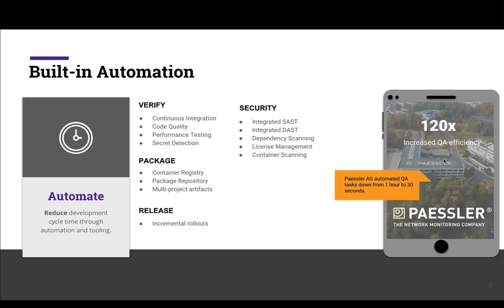First is automation. GitLab customer Piesler adopted GitLab for CI automation and took build times down from one hour to 30 seconds. Across the different development stages, automation is built in every step of the way.